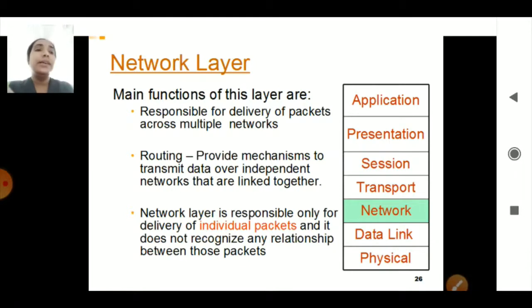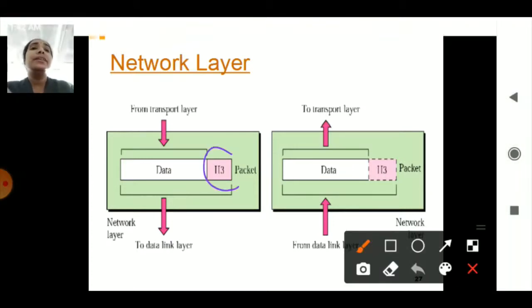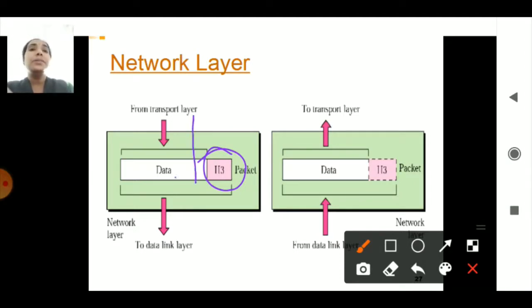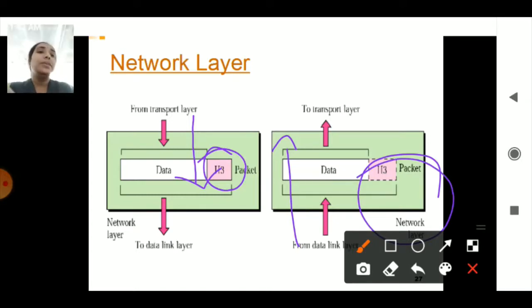This is your third layer — the Network Layer. Just like the Data Link Layer has a header and trailer, the Network Layer also has beginning and ending trailers. Data is transferred from the Data Link Layer through the Network Layer to the Transport Layer.